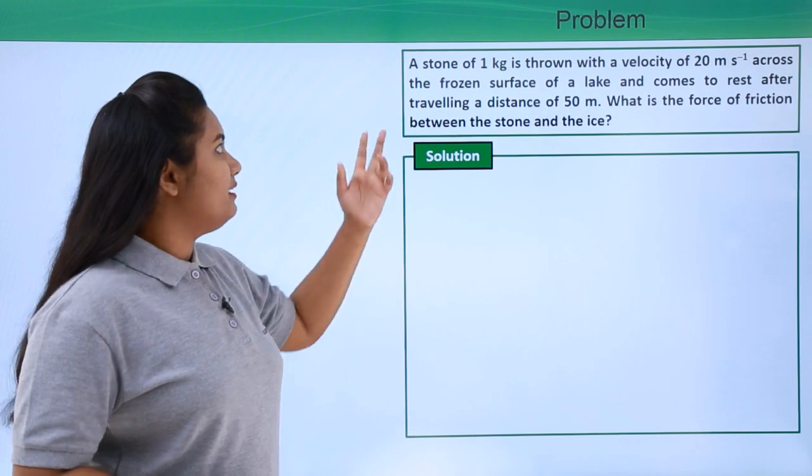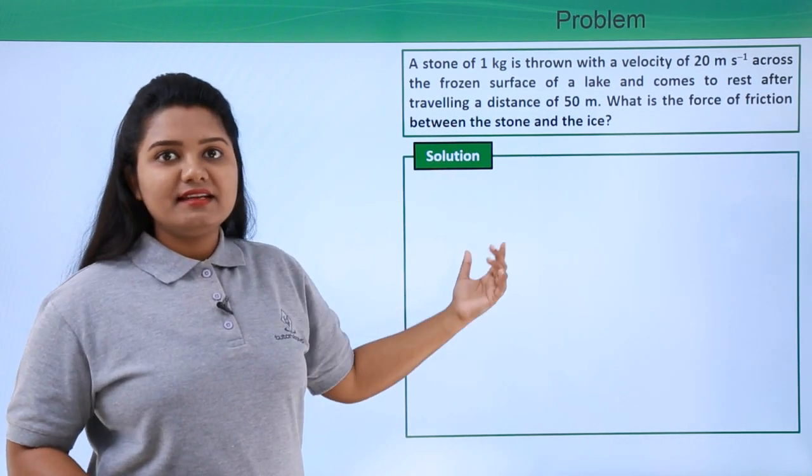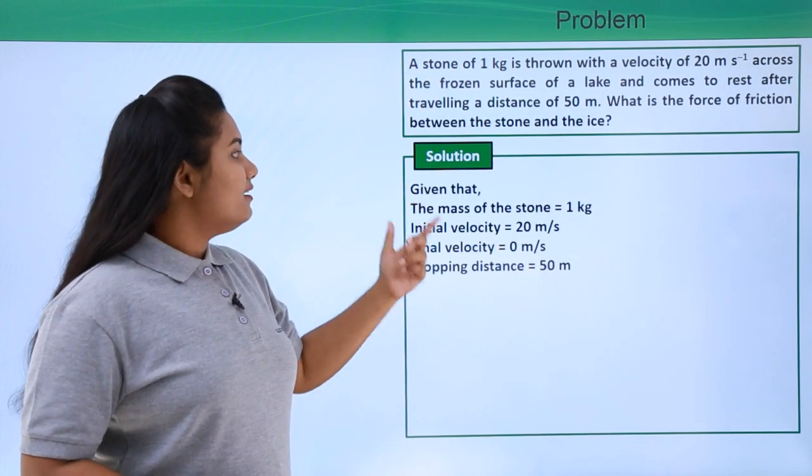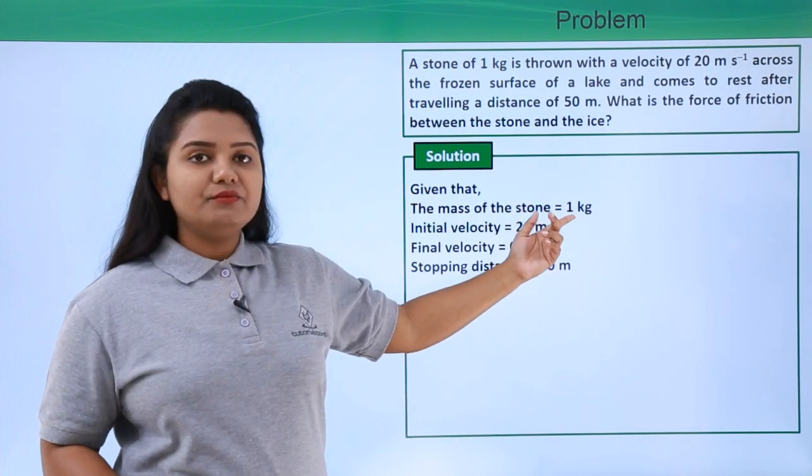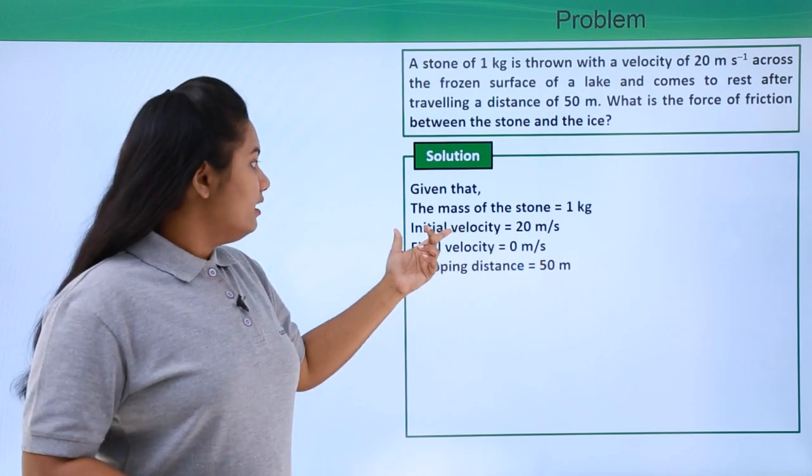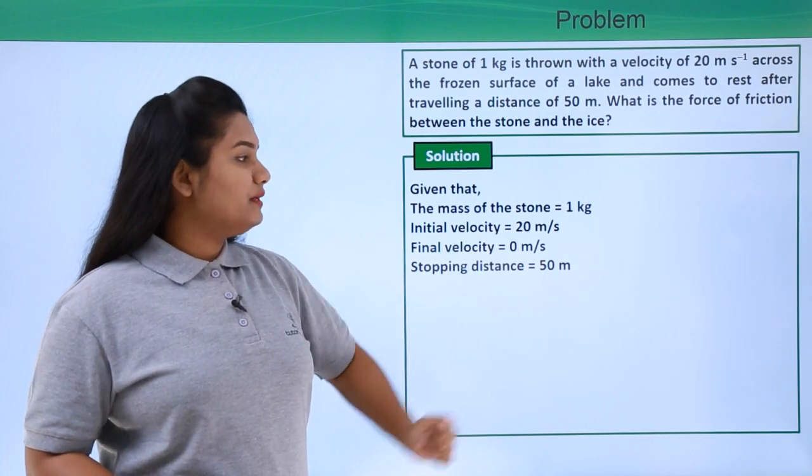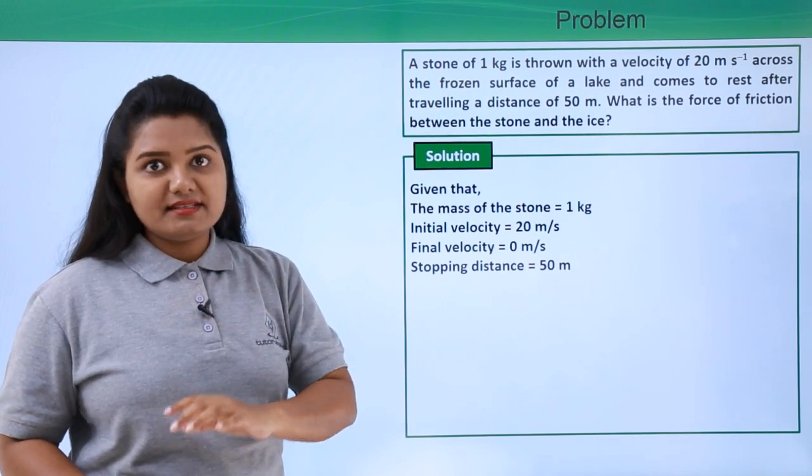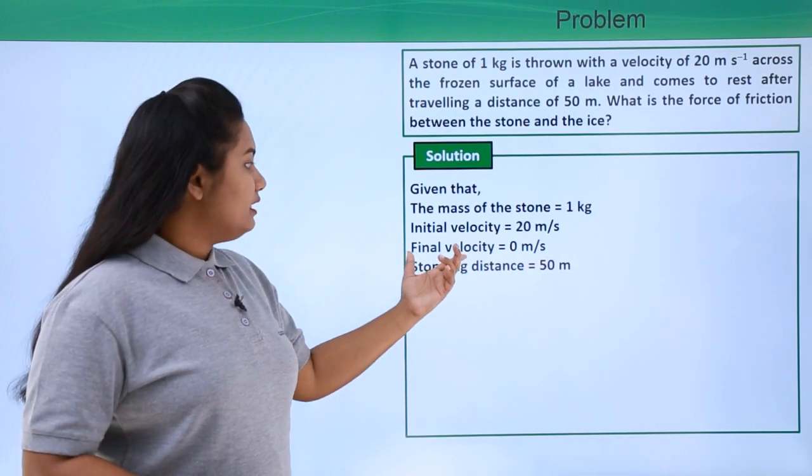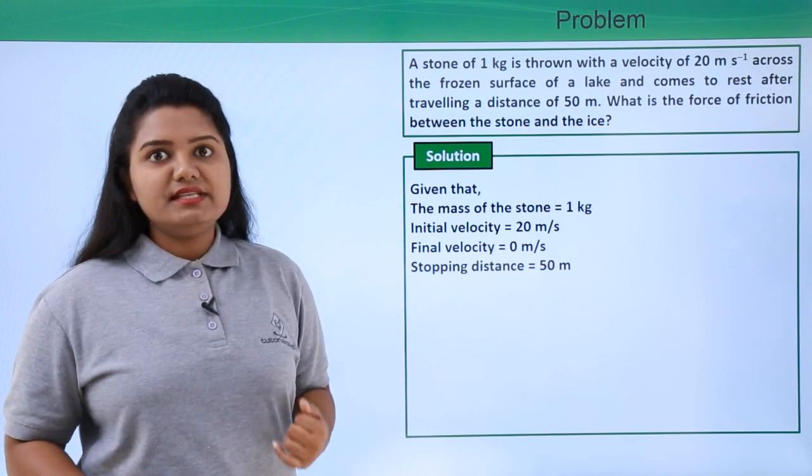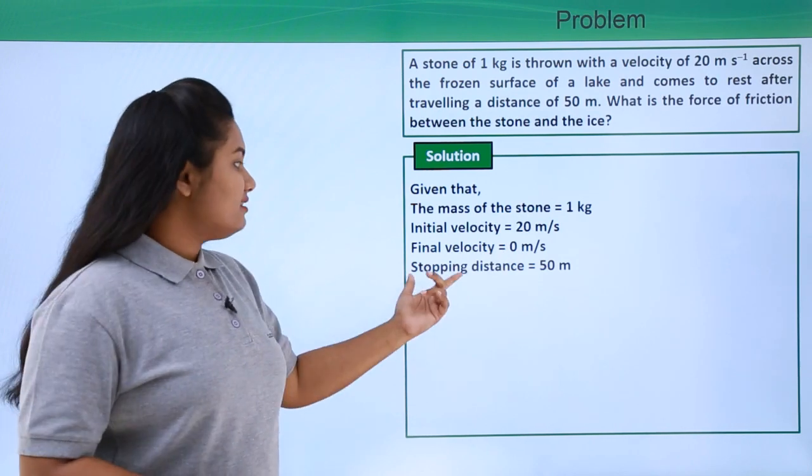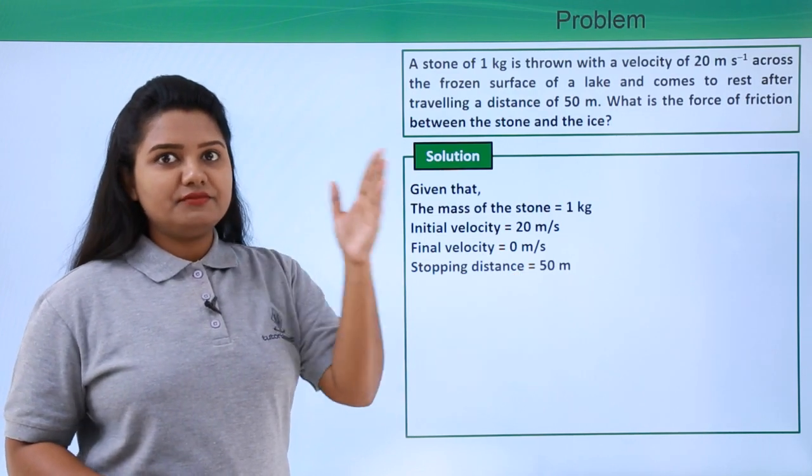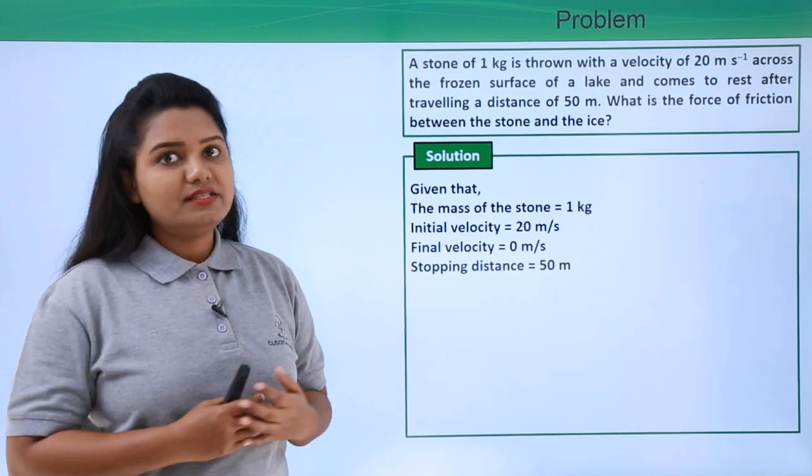Our first step will be as usual, listing out whatever information the question has given to us. Here we have the mass of the stone to be 1 kg. The initial velocity of the stone to be 20 meters per second. And since the stone has come to rest after some time, the final velocity is 0 meters per second. The stopping distance is given to be 50 meters. After traveling 50 meters, it has come to a stop.